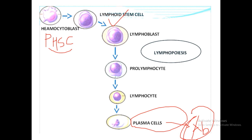There are functionally two types of lymphocyte: B lymphocytes and T lymphocytes. Initially, lymphocyte formation takes place in the bone marrow. Cells that mature inside the bone marrow are known as B lymphocytes. Cells that migrate from the bone marrow into the thymus for maturation are known as T lymphocytes.